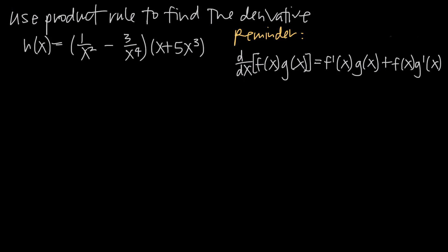In this video, we're talking about how to use product rule to find the derivative of a function. In this particular problem, we've been given the function h equal to quantity 1 divided by x squared minus 3 divided by x to the 4th, times x plus 5x cubed.